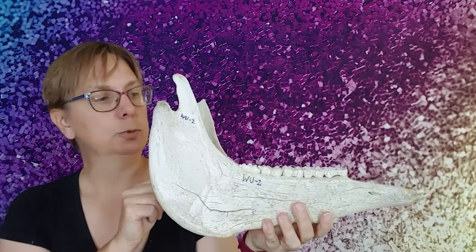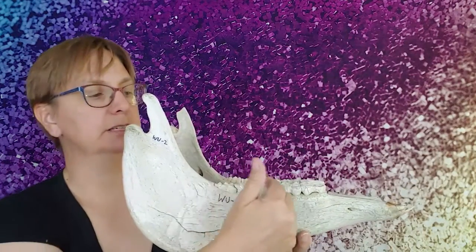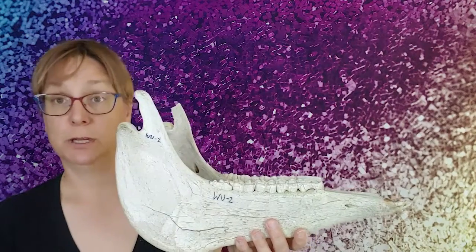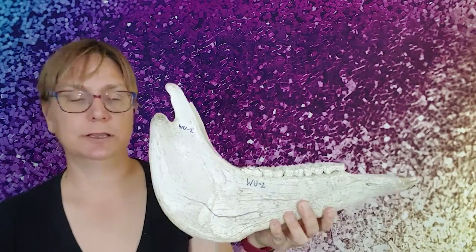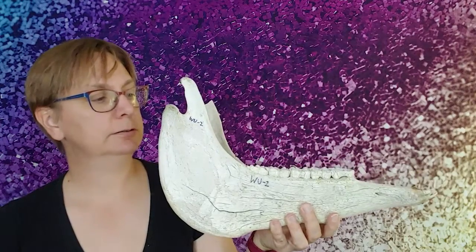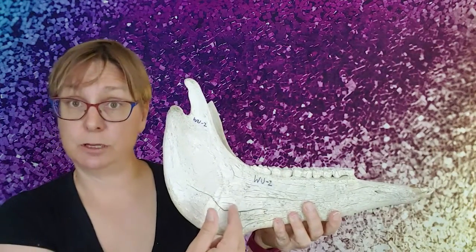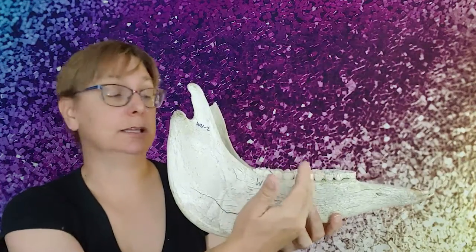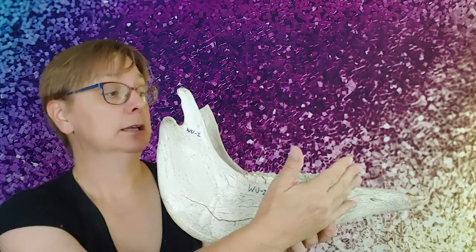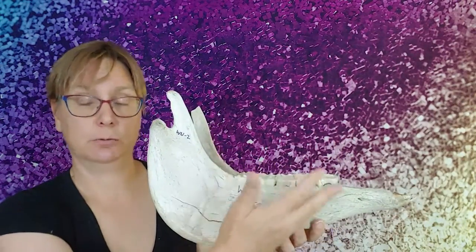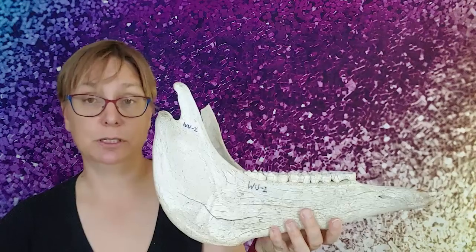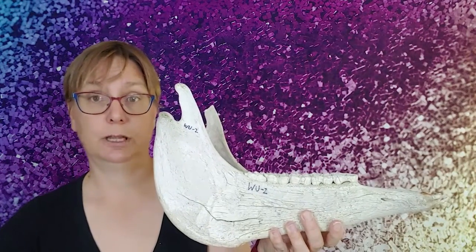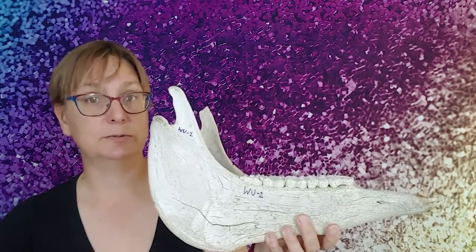One would hope with this great big jaw, with all of these teeth, that we could study the teeth to learn something about the environment that this horse was living in. This is modern horse, so we know where it came from. So we can compare directly its tooth chemistry with the environment that we know it came from. The problem is, the preferred tooth that we would use is the third molar. That's equivalent to our wisdom teeth.